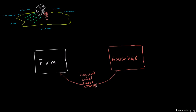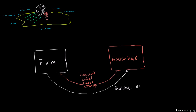In return, the firm will pay him rents for these factors of production. So the firm will pay him money in exchange for being allowed to use all of these things. For the building, the firm is going to pay him $1,000 per year — that's the building rent.